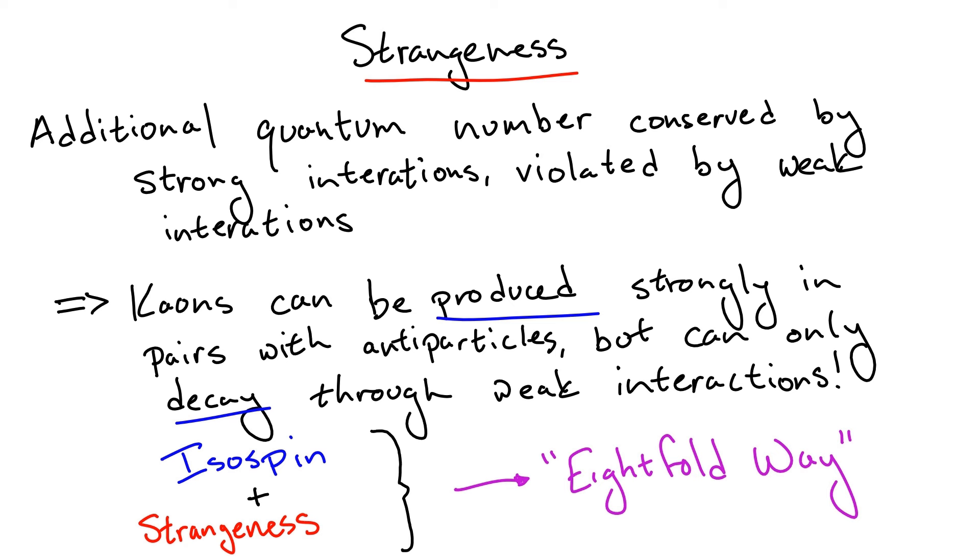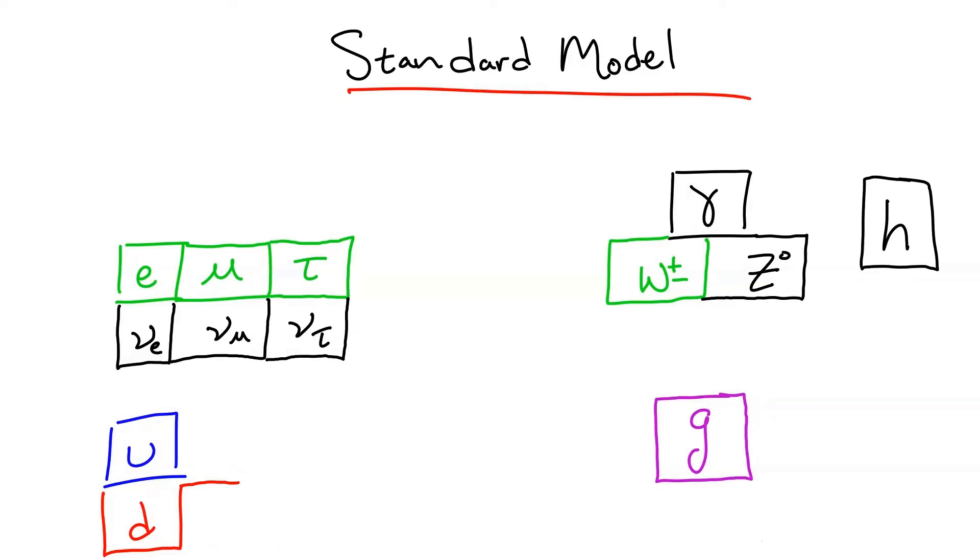After the quark picture had been established, this quantum number also received an upgrade into a fundamental particle, known as the strange quark, which has the same electric charge as the down quark, but with a mass about 20 times as large, depending on the renormalization scheme you use to calculate such quantities. Now, with the strange quark introduced, before we move forward, I want to give a fair bit of warning.